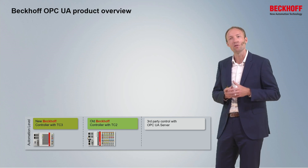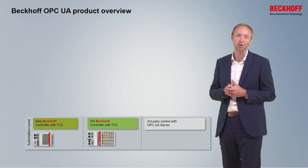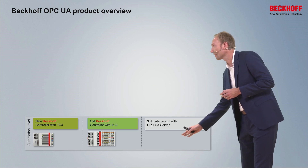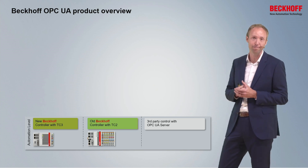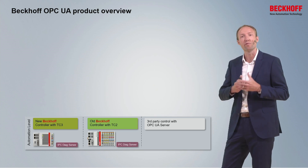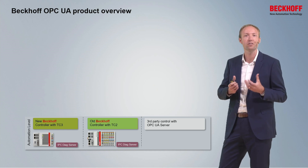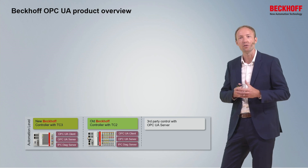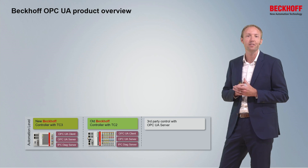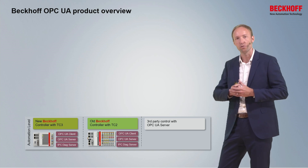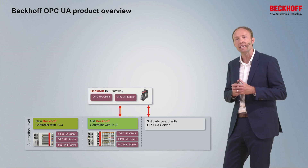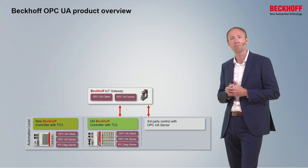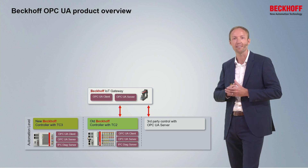Let me first give you an overview about the different layers in which we have implemented OPC UA into our products. At the automation level, every controller is equipped with a free-of-charge OPC UA server that offers diagnostics information about the industrial PC. We also have our TwinCAT OPC UA client and server applications which offer OPC UA access to or from the TwinCAT Realtime, and those applications can also be installed on an Edge device to retrofit existing machines.